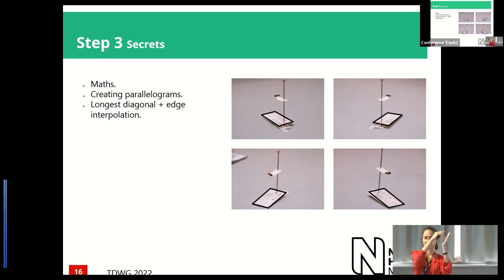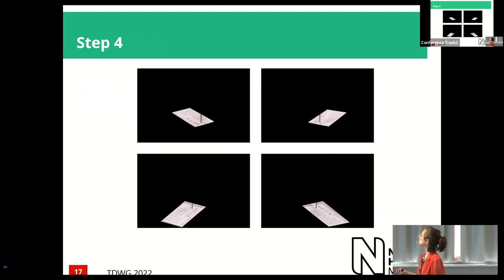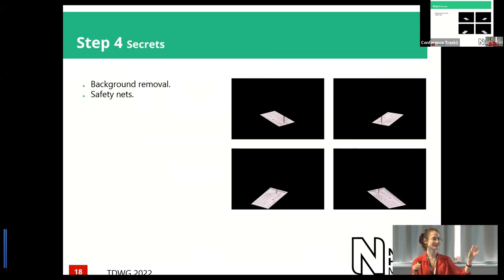Step four is segmenting it. Once you've got the box, you want to remove everything else — we only care about the label. Also, in case the corner-finding code didn't work well, you want to add a safety net: a 5% margin around that box to look at a bigger segment.